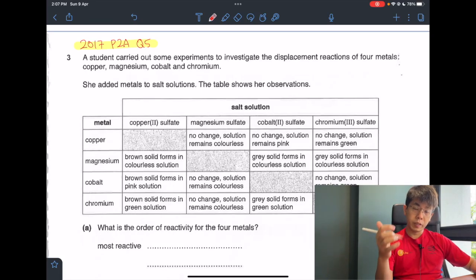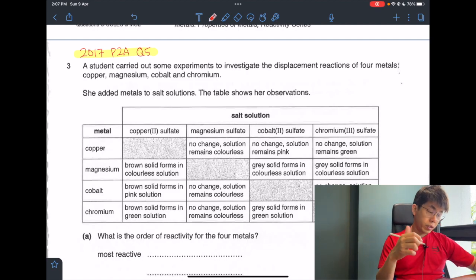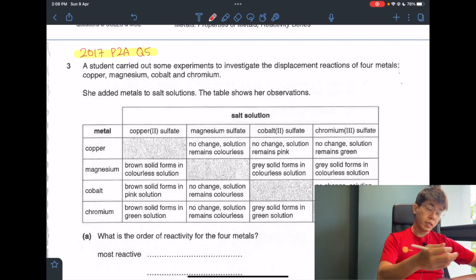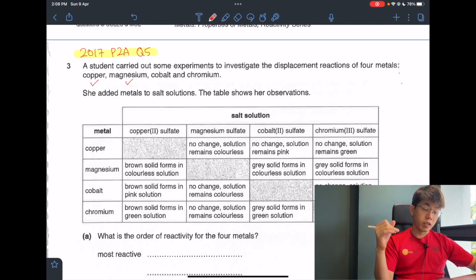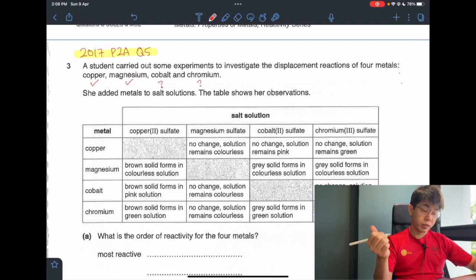Hi everyone, Mr. Benjamin here and today we'll be doing 2017 question 5. So let's get into it. A student carried out some experiments to investigate the displacement reactions of four metals: copper, magnesium, cobalt, and chromium. Immediately I know copper and magnesium's reactivity with respect to each other, but I do not know cobalt and chromium reactivity. So we need to look at the experimental results.